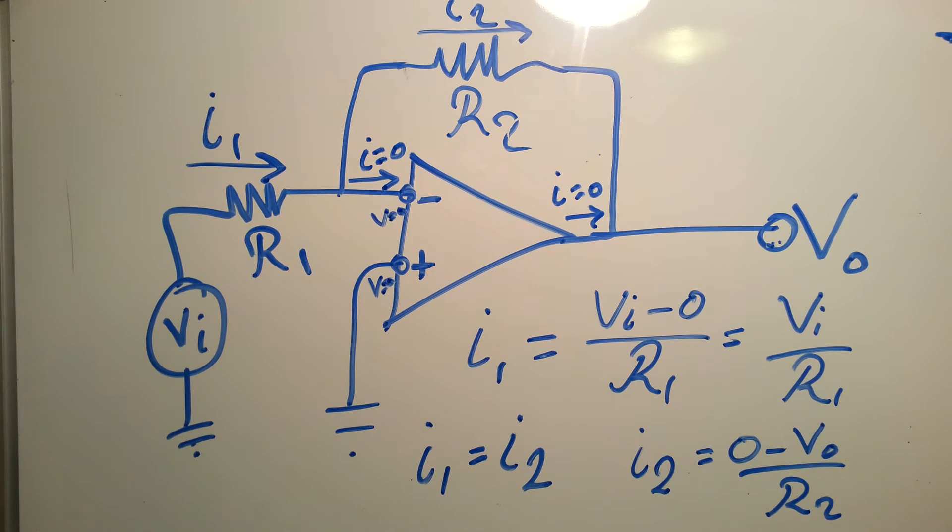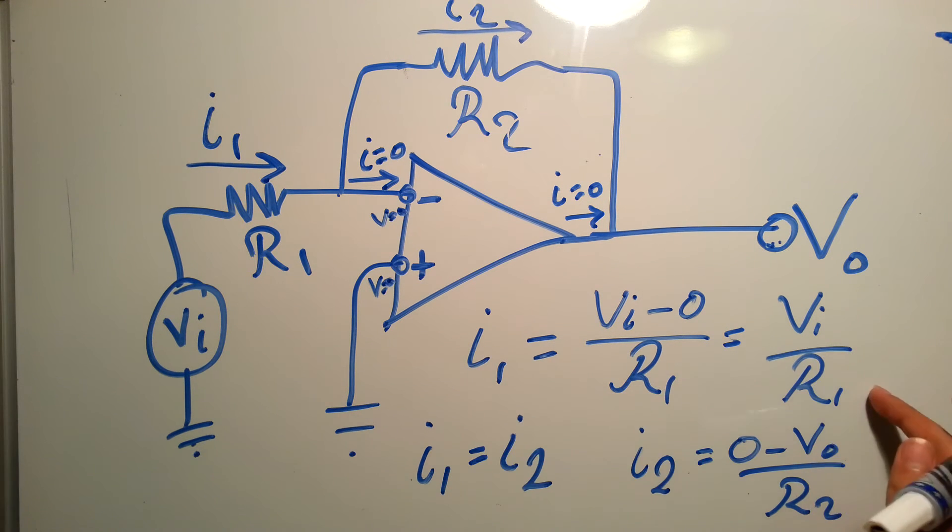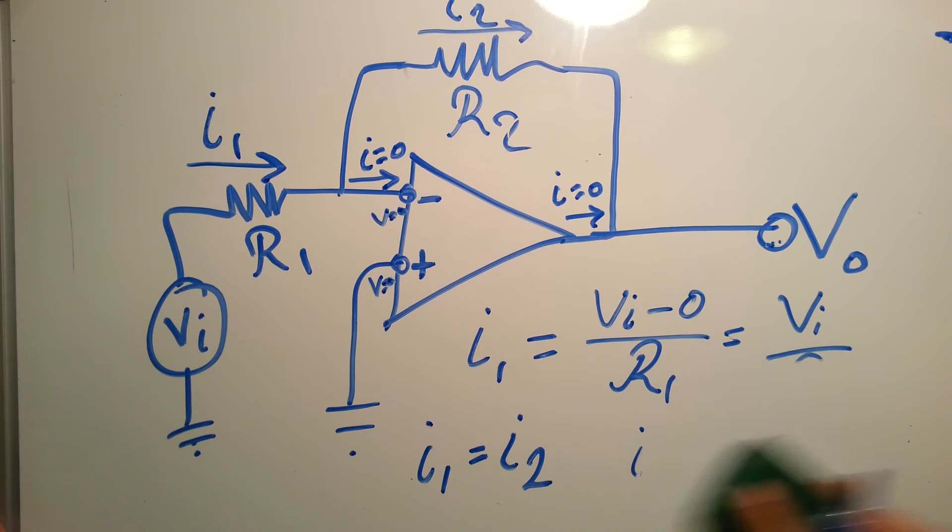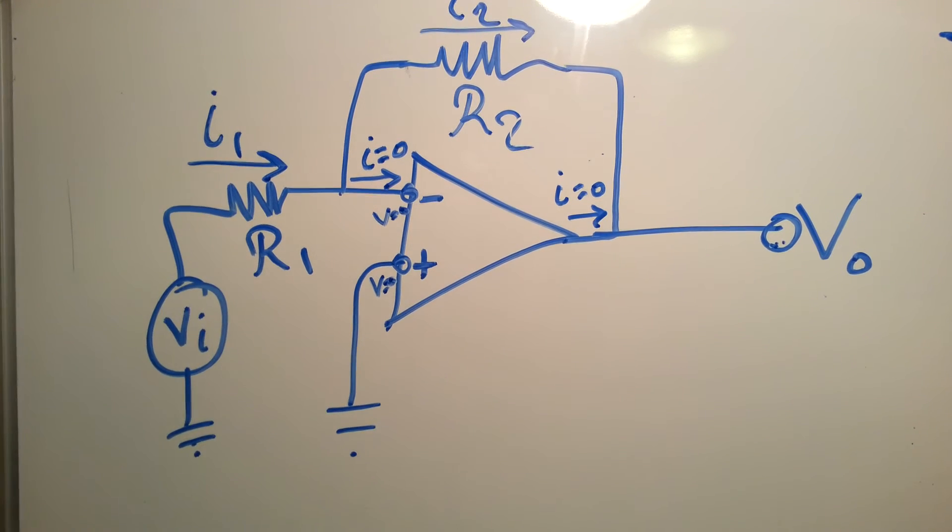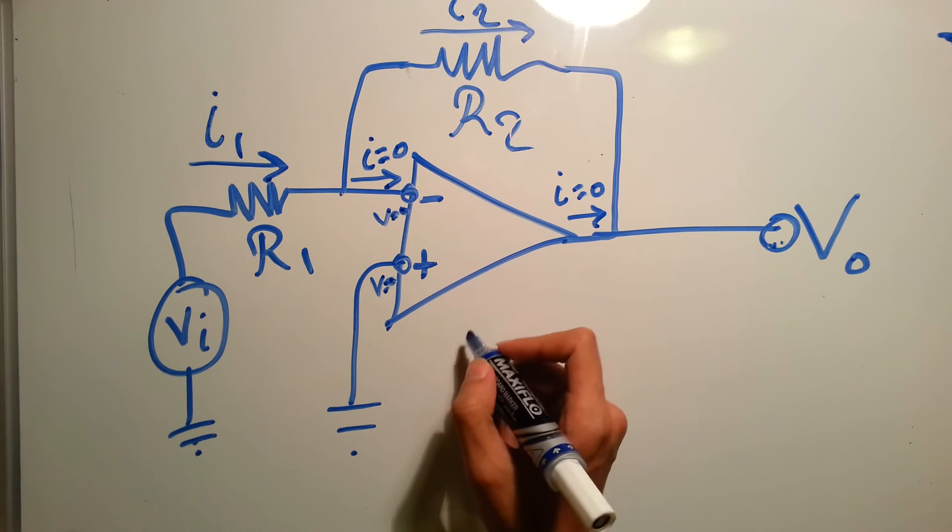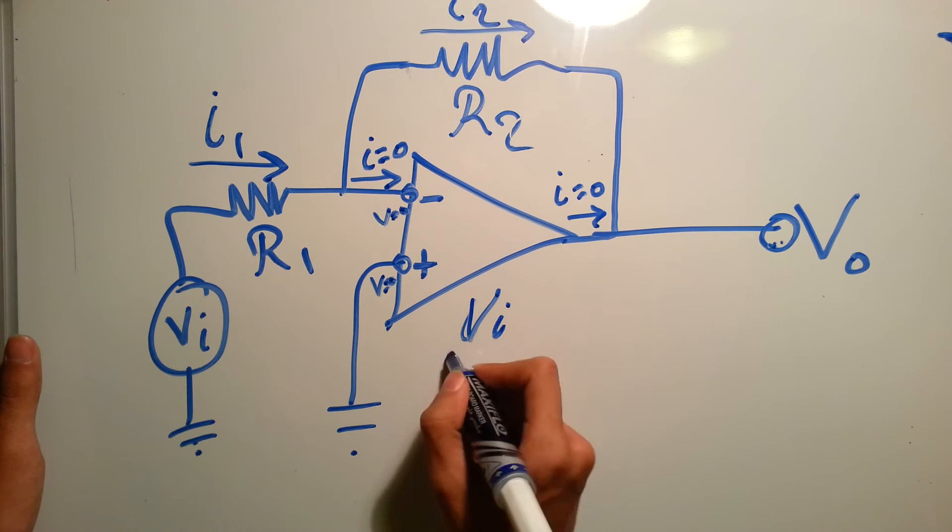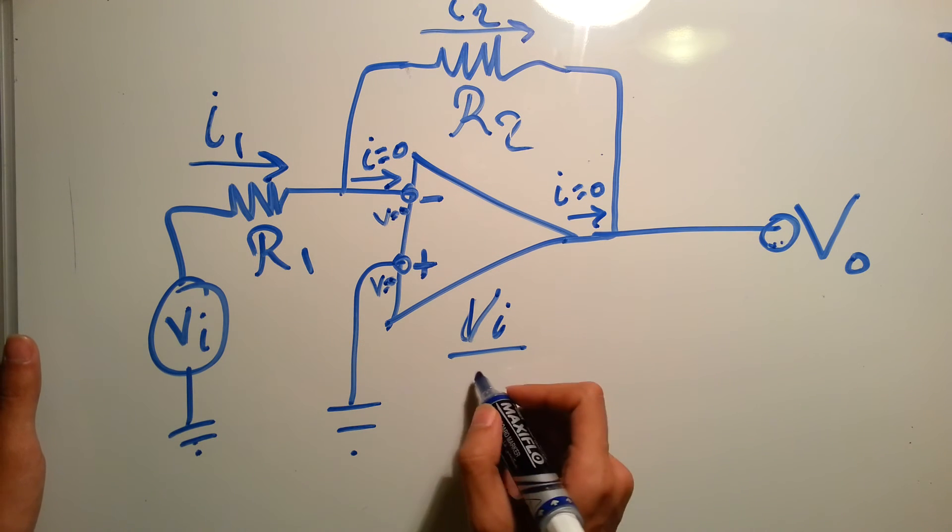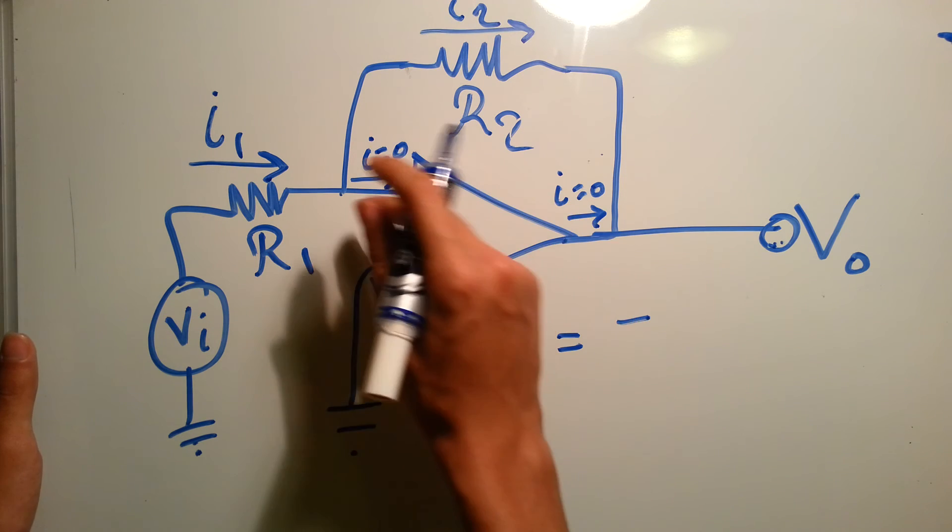Let me erase. So we know that I1 equals I2, then VI over R1 equals I2, then VI over R1 equals minus V out over R2. So we know that